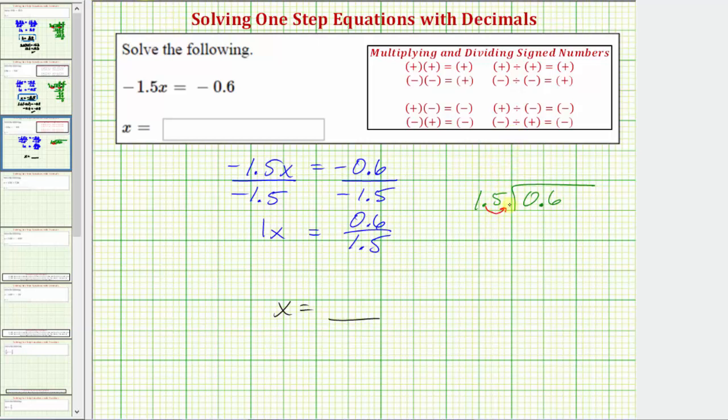We can do this as long as we do the same to the dividend. So if we multiply the dividend by 10, that's the same as moving the decimal point to the right one place. Now before dividing, we'll move the decimal point up into the quotient, and now we'll divide like we normally do.